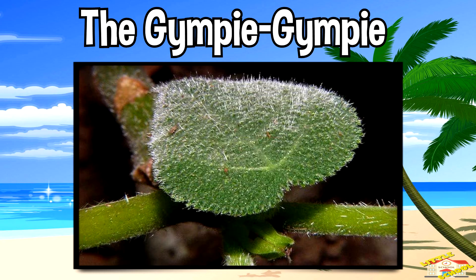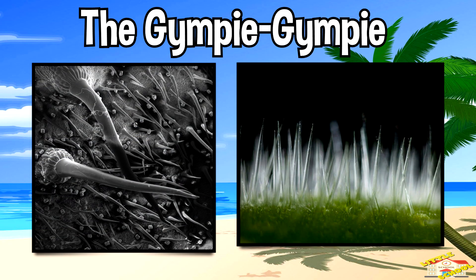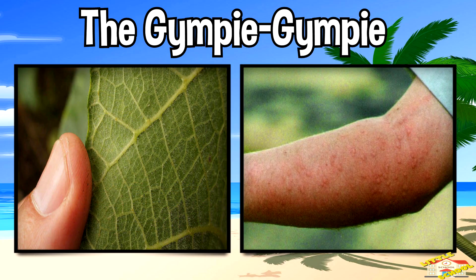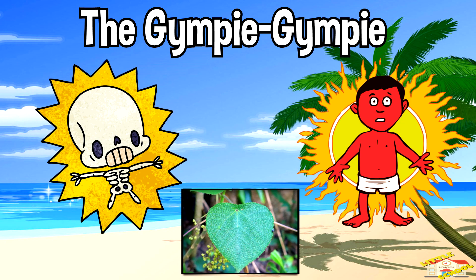The gimpy gimpy's leaves have tiny venomous hairs, or trichomes, that inject neurotoxin when touched. When these venomous hairs pierce human skin, the neurotoxin can cause extreme pain that can last for months. People describe the pain as being electrocuted and burned at the same time.